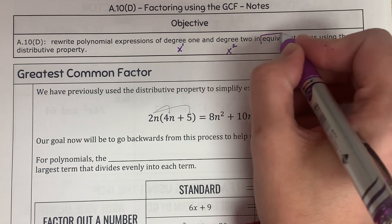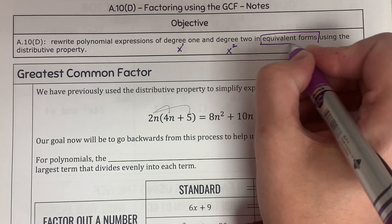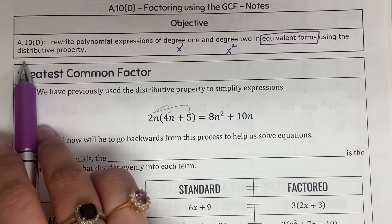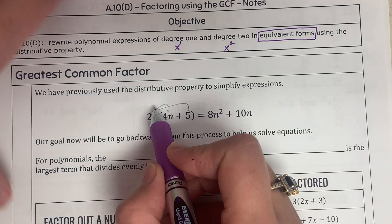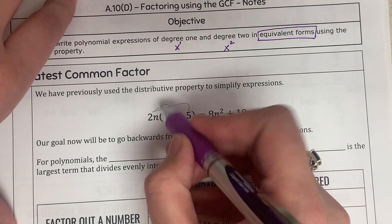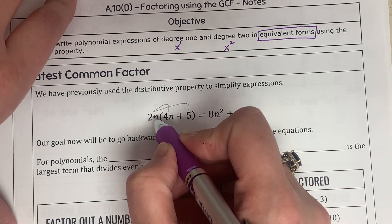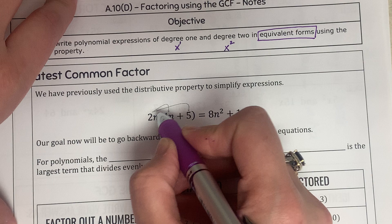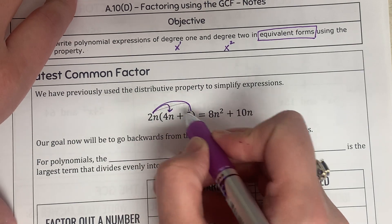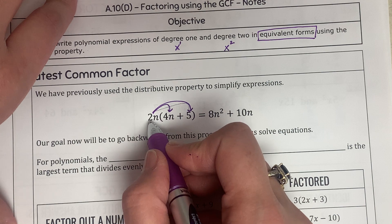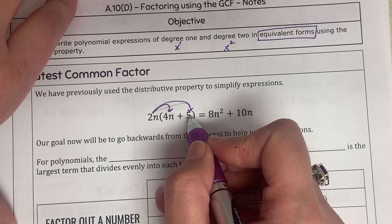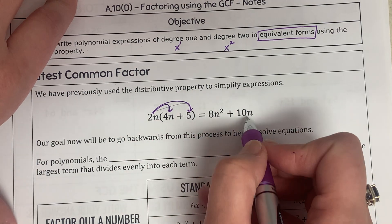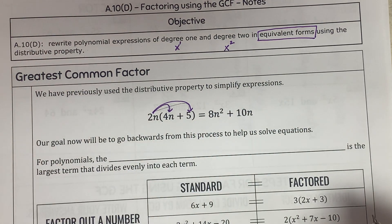We rewrite them in equivalent form — so they are going to be equal — using the distributive property. We have done the distributive property before, which means we multiply whatever is outside the parentheses with everything inside. For example, 2n multiplied by 4n is 8n squared, and 2n multiplied by positive 5 is plus 10n. So this is multiplication using the distributive property.